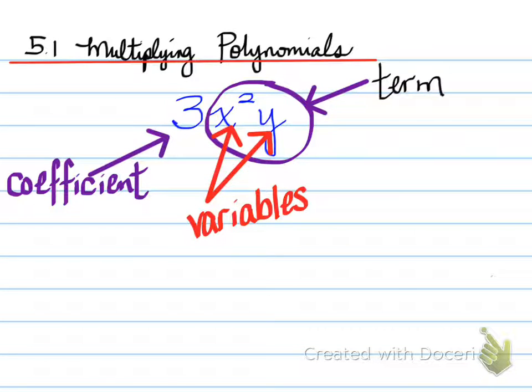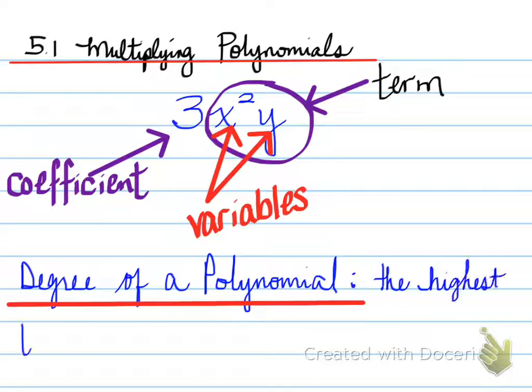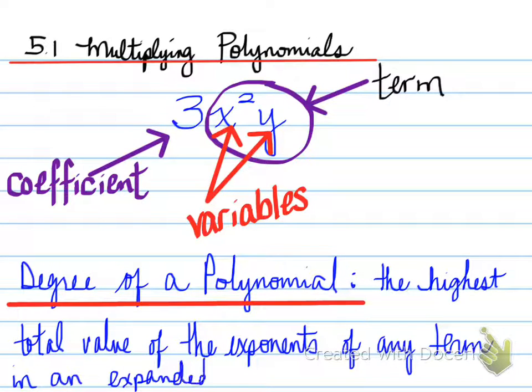So we want to combine like terms. We would add or subtract the coefficients of terms that are alike. We're going to see examples of this and collecting like terms. Now, the degree of a polynomial is the highest total value of the exponents of any term with an expanded polynomial. So in this case, this polynomial, being one term, has a degree of three. Two and one makes a total of three.